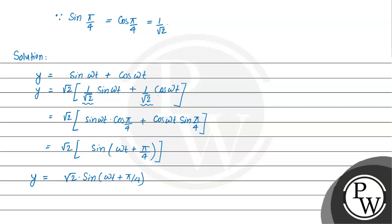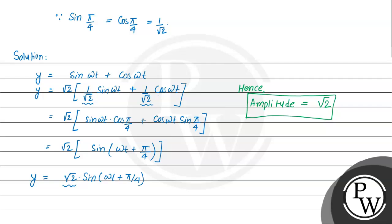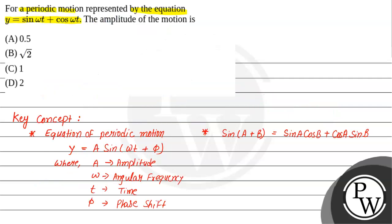Now we compare this with the general equation. We can see that the amplitude of the given equation of motion is equal to √2, and this is our final answer. From the options given, option B is our correct choice. I hope you understood the solution. Thank you.